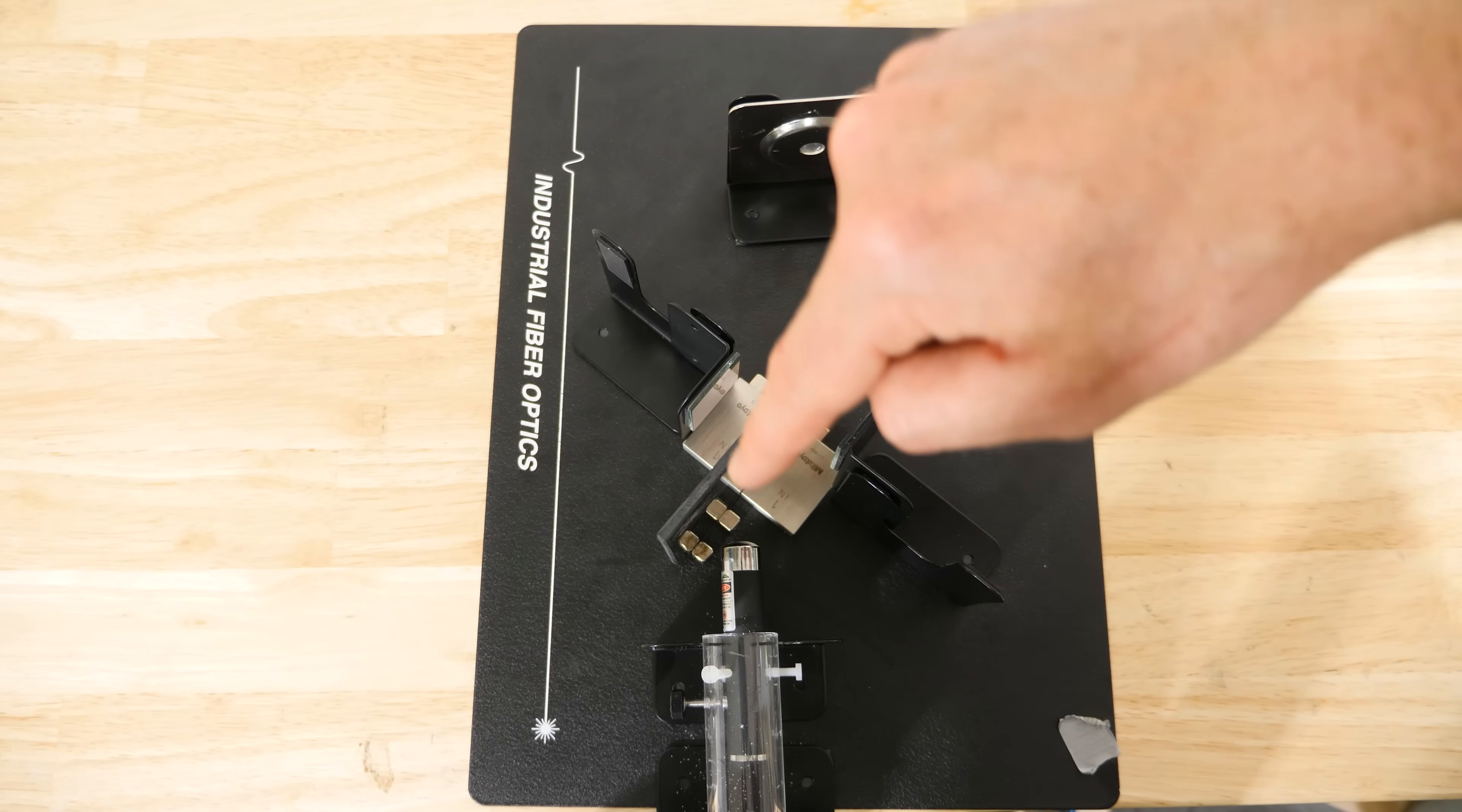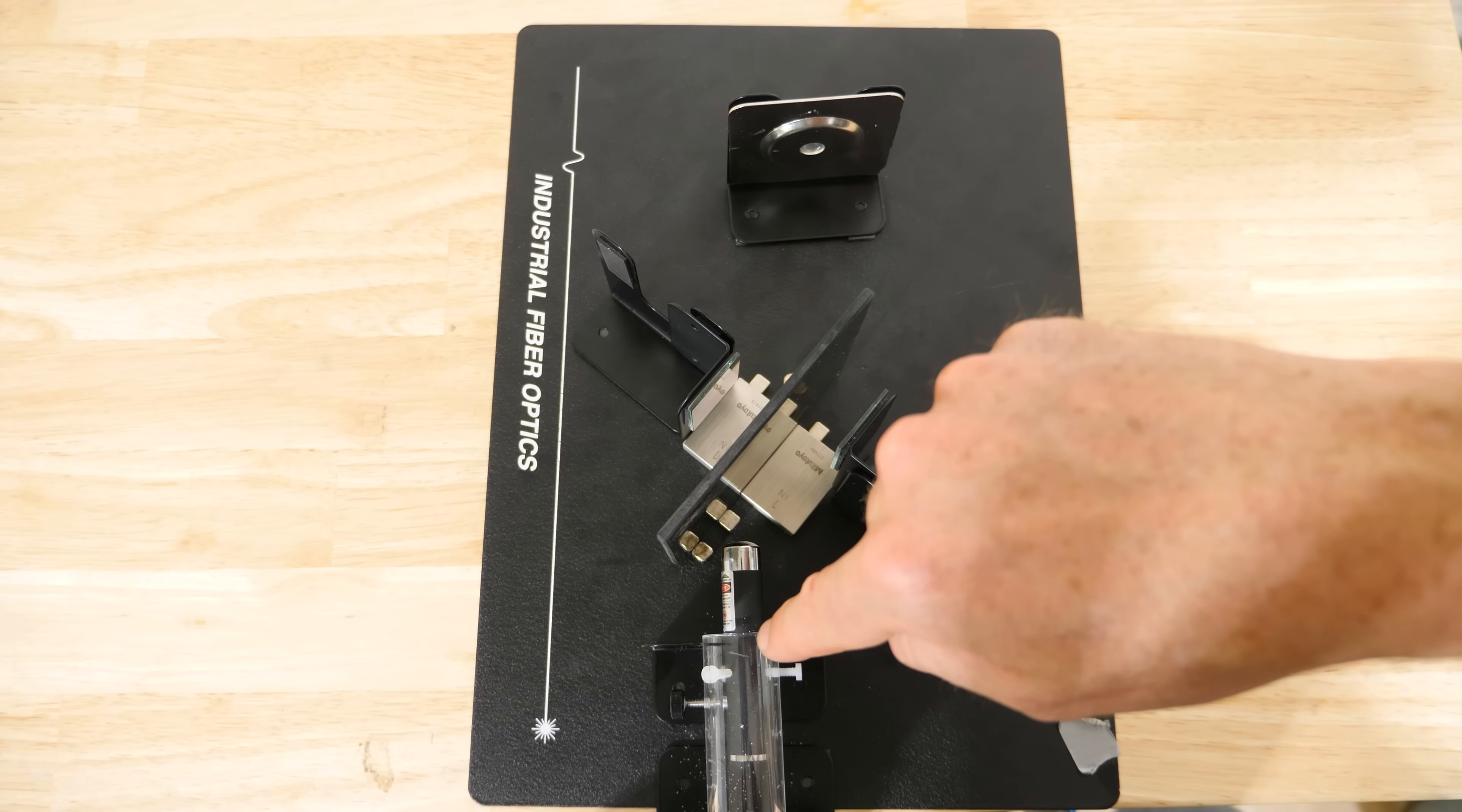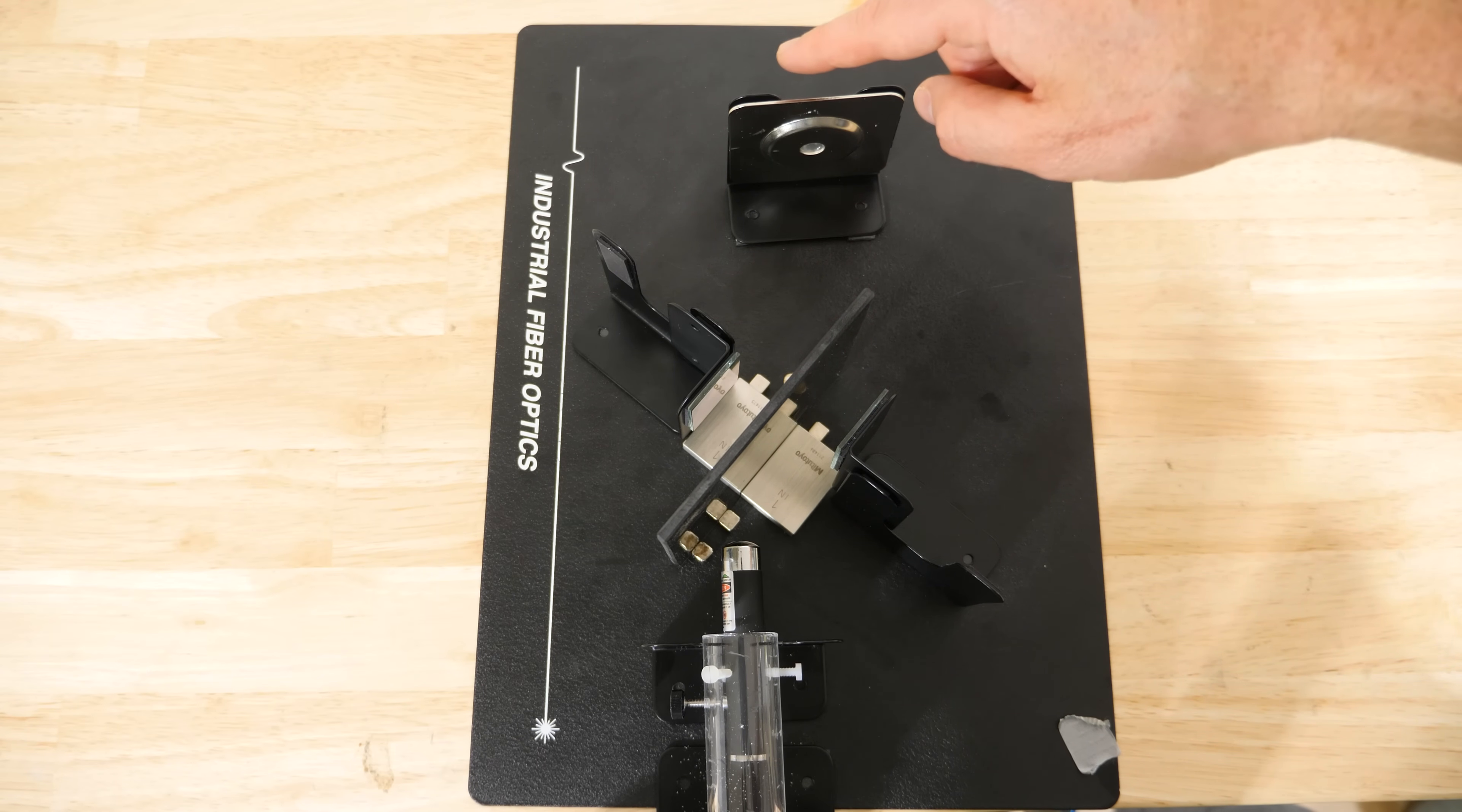So if it takes this path, it can pass through the beam splitter, hit this mirror, and then be reflected off the beam splitter to hit this lens at the back here. But if it takes this path, it can get reflected off the beam splitter, hit this mirror, go through the beam splitter, and then end up at this lens as well.